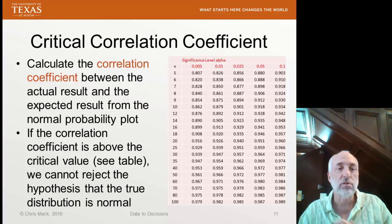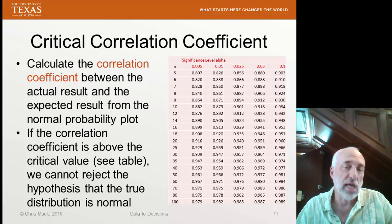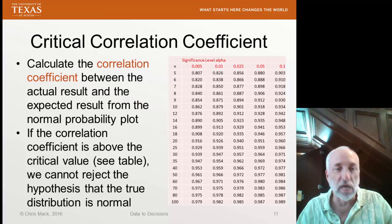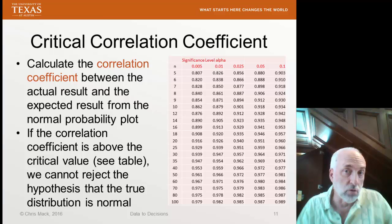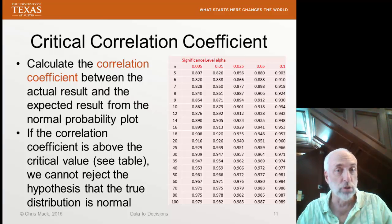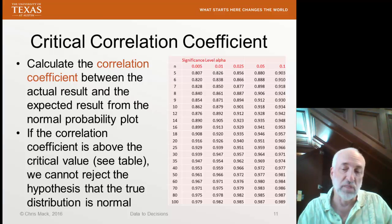And we can't reject a hypothesis that the true distribution is normal. But if you see a value less than these critical values, then you reject that null hypothesis, and you say that the data does not support a hypothesis that the distribution is normal. So that's how we use this critical correlation coefficient approach for a normal probability plot.